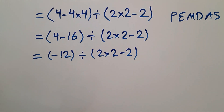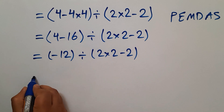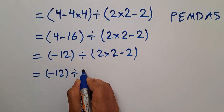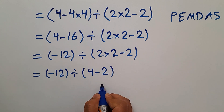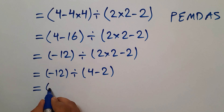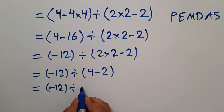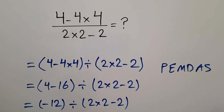Now, inside the second parentheses, we first do this multiplication: 2 times 2 gives us 4. And 4 minus 2 gives us 2. So now, negative 12 divided by 2, which gives us negative 6. So our final answer to this problem is negative 6.